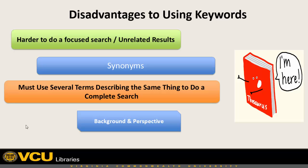PubMed is a biomedical database that takes a very medical approach when describing a patient or condition. It may be the same patient or condition, but it may be described slightly differently using medical terminology that isn't always in line with how a nurse would describe it, because a doctor is coming from a different perspective. So you have to keep all these things in mind when doing a keyword search — you're going to get a lot of results you don't want, and to get everything you do want, you'll have to use multiple terms.